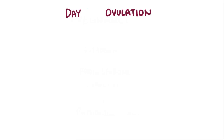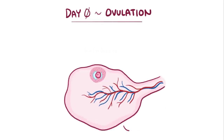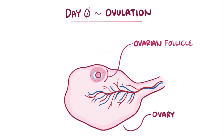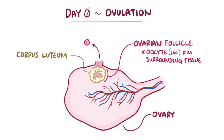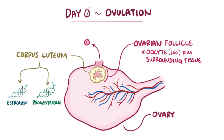Everything starts with ovulation, so let's call that day zero. On that day, in the ovary, an ovarian follicle — which is an egg or oocyte plus its surrounding tissues — matures, and ovulation occurs, which is when the egg gets ejected, while the surrounding structure becomes the corpus luteum and quickly starts making estrogen and progesterone.